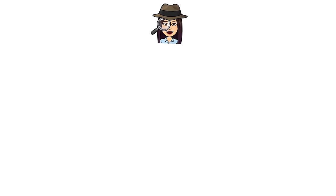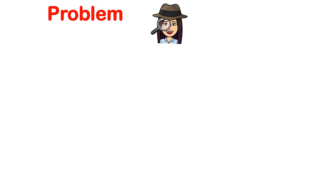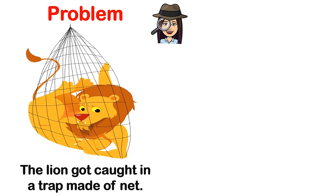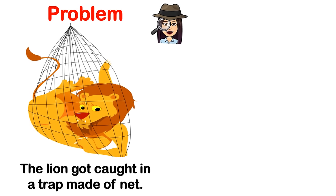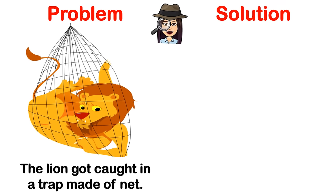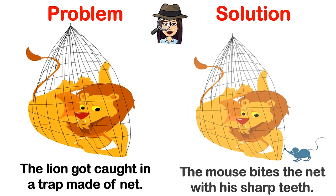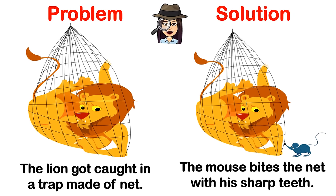Another problem encountered by the character in the story. Problem: The lion got caught in a trap made of net. Solution: The mouse bites the net with his sharp teeth.